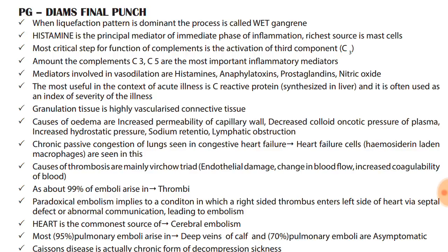Histamine is the principal mediator of the immediate phase of inflammation. The richest source is mast cells. Most critical step for function of complements is activation of complement C3. Complement C3 and C5 are the most important inflammatory mediators. Mediators involved in vasodilation are histamines, anaphylatoxins, prostaglandins, and nitric oxide. The most useful marker in the context of acute illness is C-reactive protein, synthesized in the liver, and often used as an index of severity of illness.